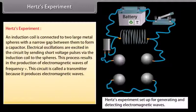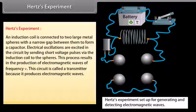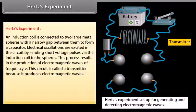Hertz experiment. An induction coil is connected to two large metal spheres with a narrow gap between them to form a capacitor. Electrical oscillations are excited in the circuit by sending short voltage pulses via the induction coil to the spheres, charging one sphere positive and the other negative. In this ionized state, the electrons and ions in the air gap oscillate back and forth with the same frequency nu as that of the circuit. This process results in the production of electromagnetic waves of frequency nu. This circuit is called a transmitter because it produces electromagnetic waves.